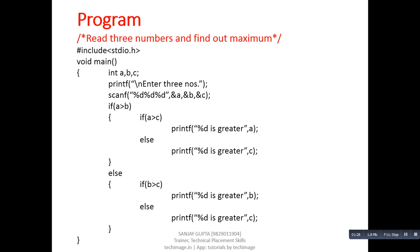This is an example to understand the working of nested if. The program reads three numbers and finds out the maximum. In this program, the first if segment and the second segment is else — this is the true part and this is the false part. The compiler checks the first if condition: suppose a is greater than b, so if a is greater than b, control will be transferred inside this true block, where another set of if-else is available which checks if a is greater than c.